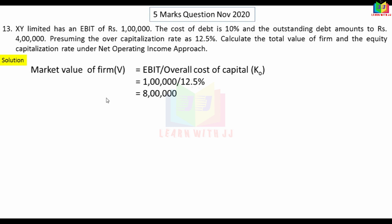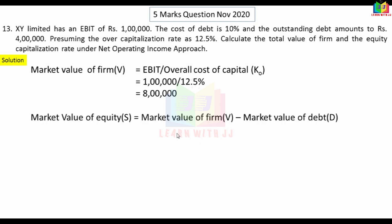Debt is 4 lakh and value of the firm is 8 lakh. Value of the firm equals market value of debt plus market value of equity. Since we know the market value of debt is 4 lakh, market value of equity equals market value of firm minus market value of debt: 8 lakh minus 4 lakh equals 4 lakh.